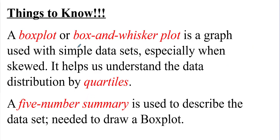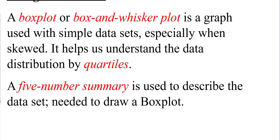Our things to know: we have what we call a box plot, also known as a box and whisker plot. This is a graph used with simple data sets and it helps us to identify skew, and we look at this based on quartiles. Remember that quartiles means four pieces — you can think of four quarters making a dollar. And then we have a five number summary, which is used to describe the data set.